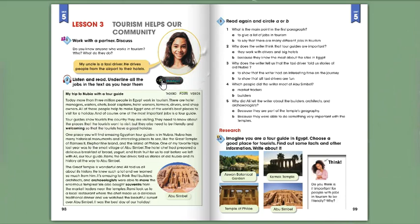The Great Temple is wonderful, and Ali told us all about its history. He knew such a lot, and we learned so much from him. It's amazing to think that builders, architects, and archaeologists were able to move the enormous temples. We also bought souvenirs from the market traders near the temples. Rami took us to a local restaurant where the chef made us a delicious traditional dinner, and we watched the beautiful sunset over Abu Simbel. It was the best day of our holiday.